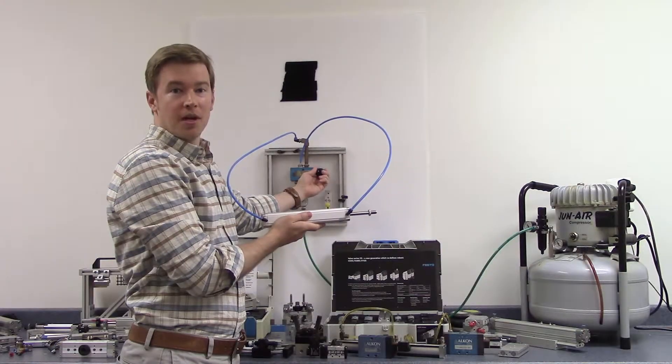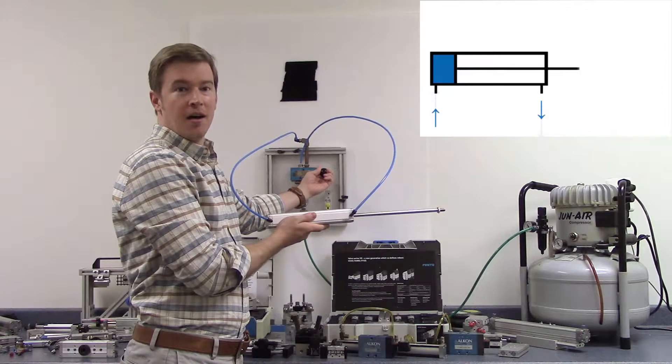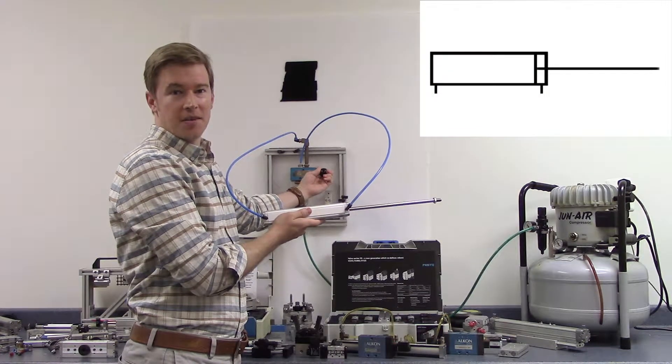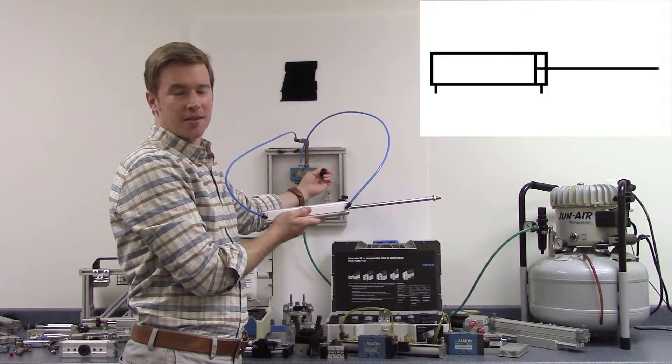When air is supplied to the cylinder from one port, the air pushes against the piston, causing it to move. At the same time, air exits from the other port, and the rod extends.